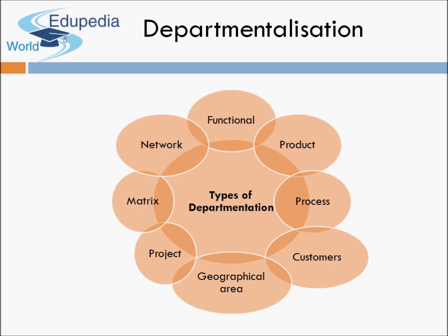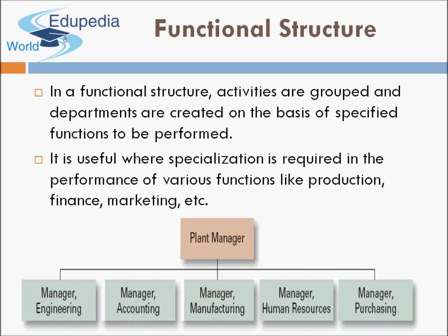The different types of departments that can be formed are: functional, product, process, customer, geographical area, project, matrix, and network. Every organization can have one or multiple kinds of departmentalization. The first is the functional structure — it is very simple. Different functions are to be performed in an organization: HR, marketing, sales, accounts, finance, operations, and production. Depending upon every function, one department is formed.